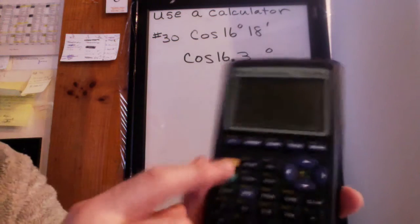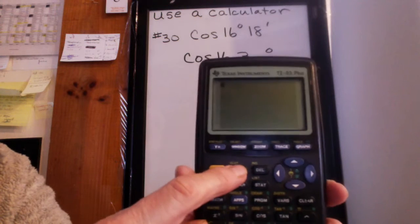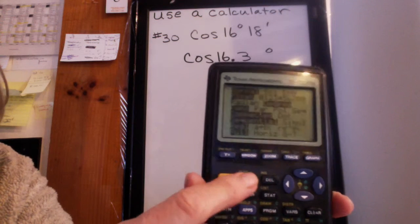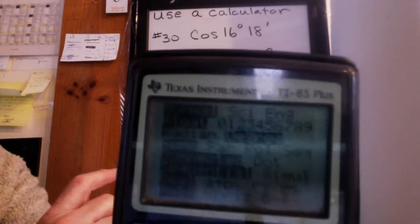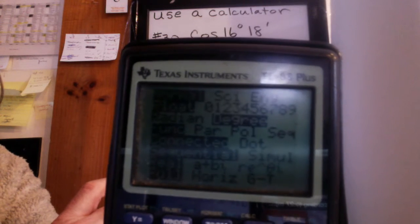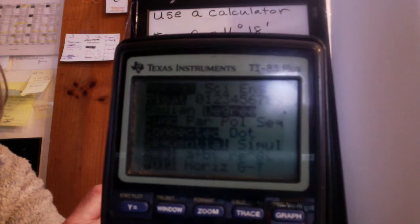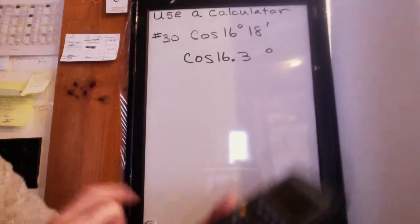The first thing I want you to do though is check the mode button, which is right next to this yellow key, and make sure your calculator is in degree mode. As you can see, degree is highlighted there, so there's two choices: radian or degree.